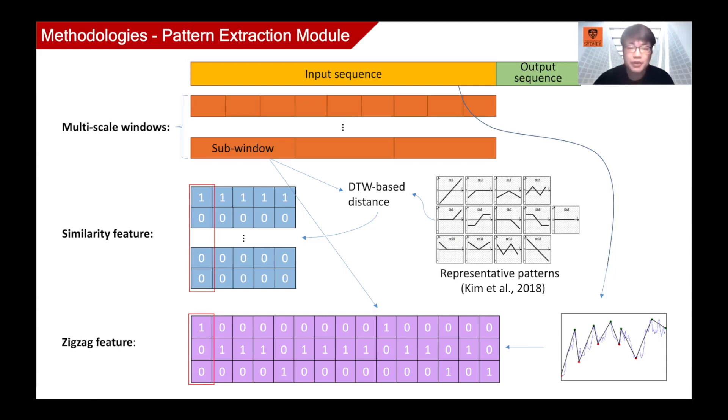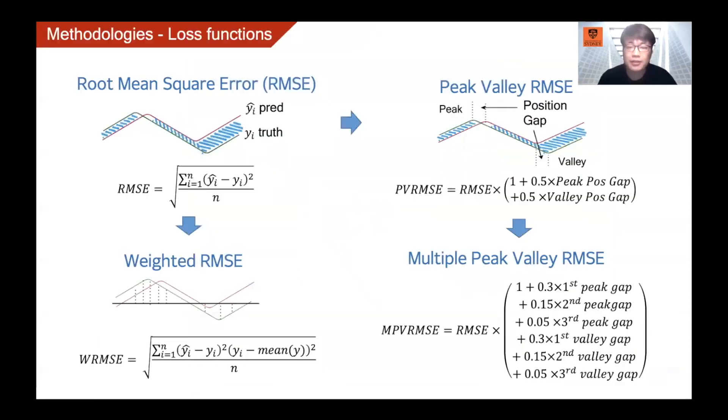The features of the sub-windows with the same length will be concatenated, then all the features will be stacked together with the input sequence to form the input matrix. Now let's move to talk about the loss function. Our aim is to forecast the future trend of a period. Especially the peak and valley points are the most important.